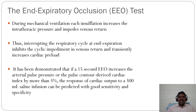The end-expiratory occlusion test: during mechanical ventilation, each insufflation increases intrathoracic pressure and impedes venous return. Interrupting the respiratory cycle at end expiration inhibits this cyclic impediment to venous return and transiently increases cardiac preload. It has been demonstrated that if a 15-second end-expiratory occlusion increases arterial pressure or pulse-contour-derived cardiac index by more than 5%, the cardiac output response to a 500 mL saline infusion can be predicted with good sensitivity and specificity.